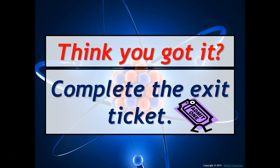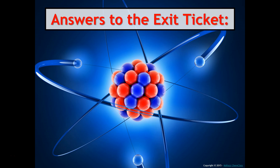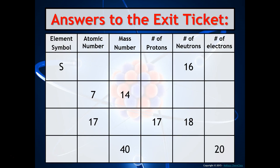There was an exit ticket with practice, and this will be the exact type of assessment you'll see in the near future. Here are the answers. First up is sulfur: the atomic number is 16, and the mass number is 32. You get the mass number by adding the atomic number (protons = 16) plus the number of neutrons. Because the atom is neutral, the number of electrons also equals 16.